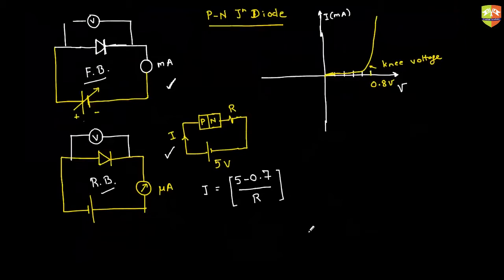In forward bias, the PN junction creates a junction barrier of about 0.7 volts. Once you overcome that barrier, it behaves like a metal. So if you supply 5 volts externally, 0.7 volts is used to overcome the barrier, and the remaining 4.3 volts is the effective voltage across the resistance R. That is how you calculate current in a forward-biased diode circuit.